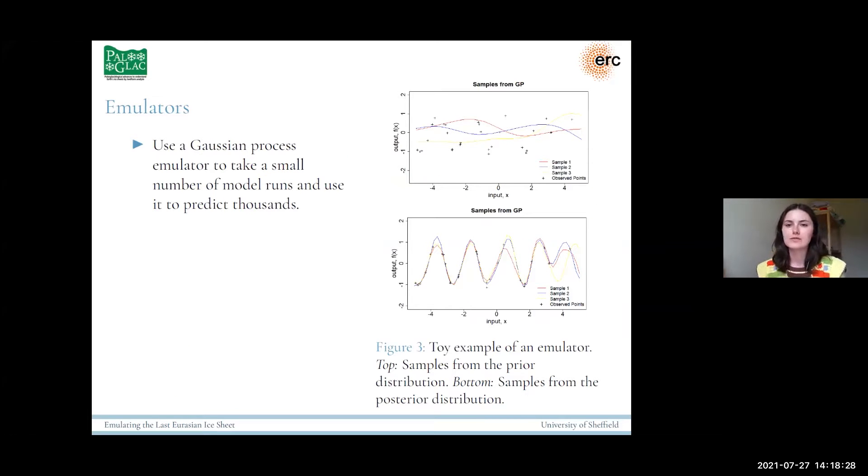To do this, we want to use emulators. Emulators are a way that we can take a small number of model simulations and use those to predict thousands. We'll use a Gaussian process emulator, which starts by taking a prior, which you can see in this top image here, just some samples of a generic prior. And then use the observations, which are the crosses in this short example, to update the posterior distribution to make it fit the data a lot better.